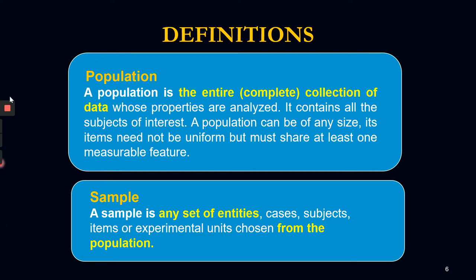These are the basic few terms in statistics that we're going to repeat in this course. The first one is population. A population is the entire or complete collection of data whose properties are analyzed. It contains all the subjects of interest. A population can be of any size, its items need not be uniform but must share at least one measurable feature.